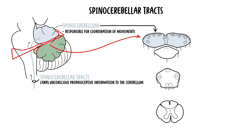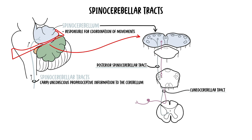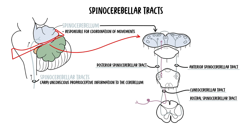Proprioceptors allow us to be aware of the position and movement of our body in space. There are four individual pathways: the posterior spinocerebellar tract, the cuneocerebellar tract, the anterior spinocerebellar tract, and the rostral spinocerebellar tract. All these tracts travel from the proprioceptors up the spinal cord to the cerebellum.